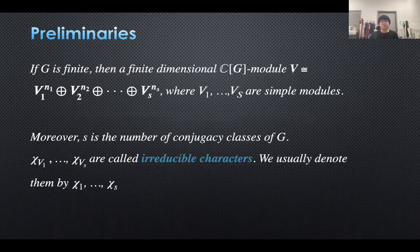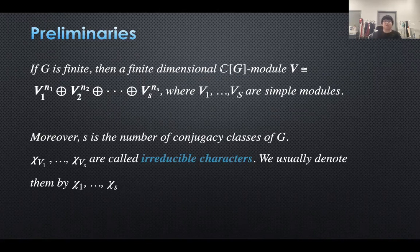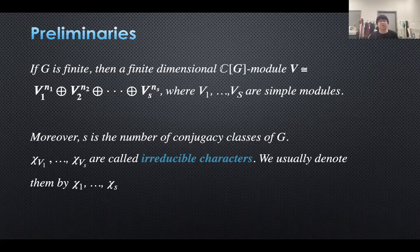Now we will see a really important conclusion: CG is always a semi-simple ring. By semi-simple, we mean that every CG module can be uniquely written as a direct sum of simple CG modules. Moreover, S is the number of conjugacy classes of G, and chi V1 to chi Vs are called the irreducible characters. For convenience, we denote them by chi 1 to chi S.